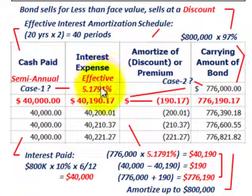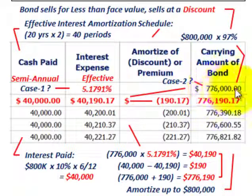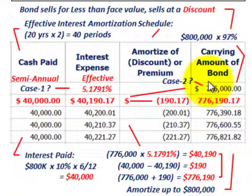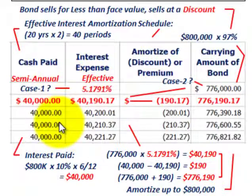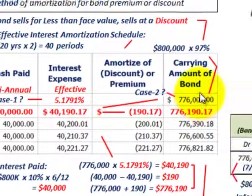First we had to determine the effective interest rate using a financial calculator or the Excel function. Now we're going to look at the case where we have to determine the issue price on the bond. We know it from this problem — it was given at 97% of the $800,000 bonds issued — but let's consider the case where we don't know the carrying amount. We'll be given the face amount, the effective interest rate, the cash payment, and the number of periods.